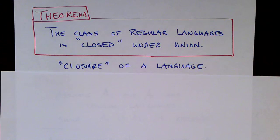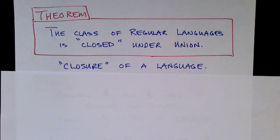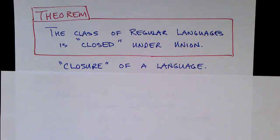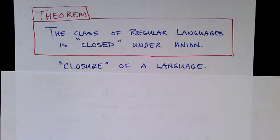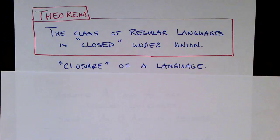Let me talk a moment about what it means to be closed. This idea of closure is that if you take some elements from a set and perform an operation on them, the result of the operation is also in that set. For example, if you take the integers and consider the operation of addition, the integers are closed under addition because if you add any two integers, the result is also an integer. On the other hand, the set of integers is not closed under division because if you take some integers and divide them, the result is no longer an integer.